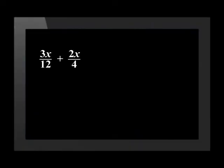Now that we've covered dividing and multiplying fractions, let's move on to adding and subtracting them. Fractions can only be added or subtracted if their denominators are exactly the same. We find the lowest common denominator by using equivalent fractions. Let's do an example: 3x over 12 plus 2x over 4. These fractions are being added, so we need to find a lowest common denominator and rewrite the fractions in equivalent form. 12 is the lowest number that both 12 and 4 can become through multiplication.